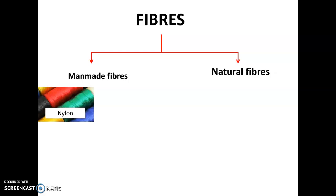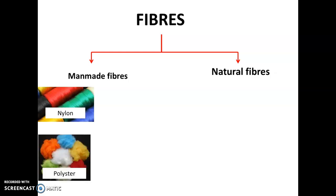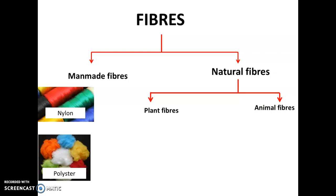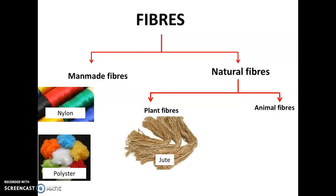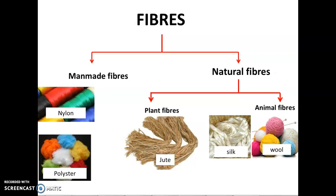Examples of man-made fibers are nylon, rayon, polyester, and plastic. Natural fibers are those obtained naturally from plants as well as animals. The two types of natural fibers are plant fibers and animal fibers. Examples of plant fibers are jute, flax, and hemp. Examples of animal fibers are silk and wool. In this video we'll learn about animal fibers.